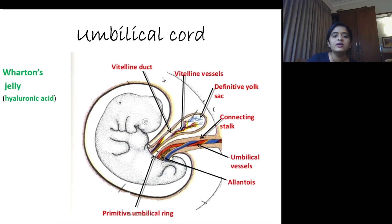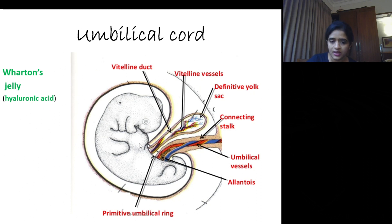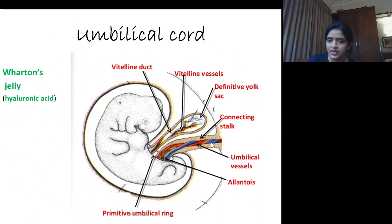The umbilical cord is mainly made up of Wharton's jelly, which is rich in hyaluronic acid. The primitive umbilical ring is through which the contents of the abdominal cavity protrude out. The primitive umbilical ring will transmit the umbilical cord. It also transmits the vitelline duct with vitelline vessels and the allantois.